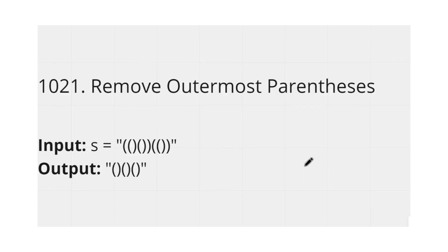Today we will discuss our next question: Remove Outermost Parentheses. We are given an input and need to produce an output. We have a string of parentheses, and what we can do is split our string into valid substrings of parentheses. For example, open-close, open-close, and open-close — each of these is a valid one.